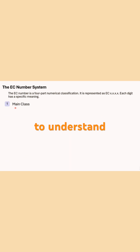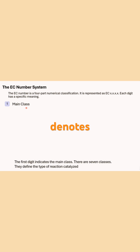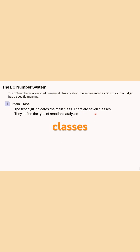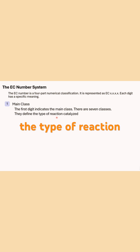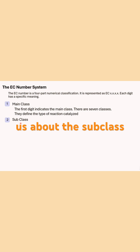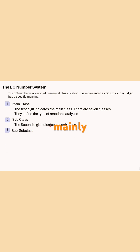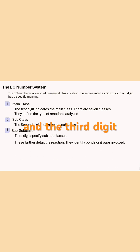The first digit denotes the main class — there are seven classes as per this classification. So the first digit tells about the main class of the enzyme and defines the type of reaction that particular enzyme is catalyzing. The second digit tells us about the subclass, which is mainly based upon the functional group on which that particular enzyme is acting.